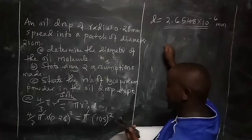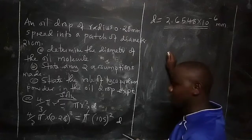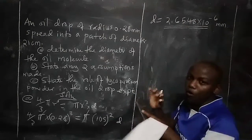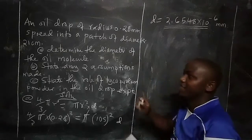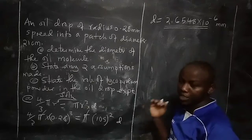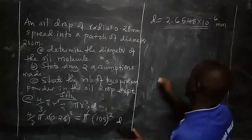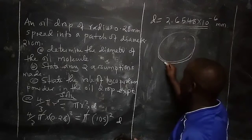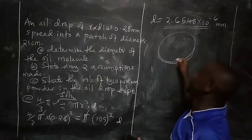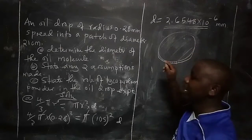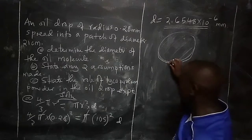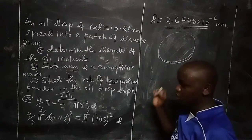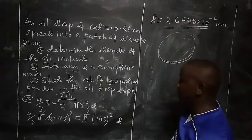For Part B, we state any two assumptions made in the experiment. The first assumption is that the drop of oil is perfectly spherical before landing on the lycopodium powder to spread. The second assumption is that the oil patch which is formed is perfectly cylindrical — it forms a circular patch with a thickness of exactly one molecule.